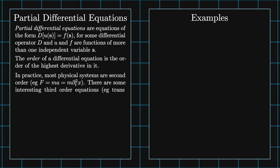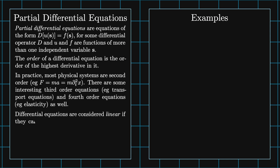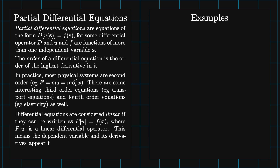For instance, F equals MA equals M times DT squared of X. However, there are some interesting third order equations. For instance, mass transport equations are third order. And fourth order equations include the elasticity equations. Differential equations are considered linear if they can be written as P of U equals F of X, where P of U is a linear differential operator. That means that the dependent variable and its derivatives appear in the equation at most to the first power.